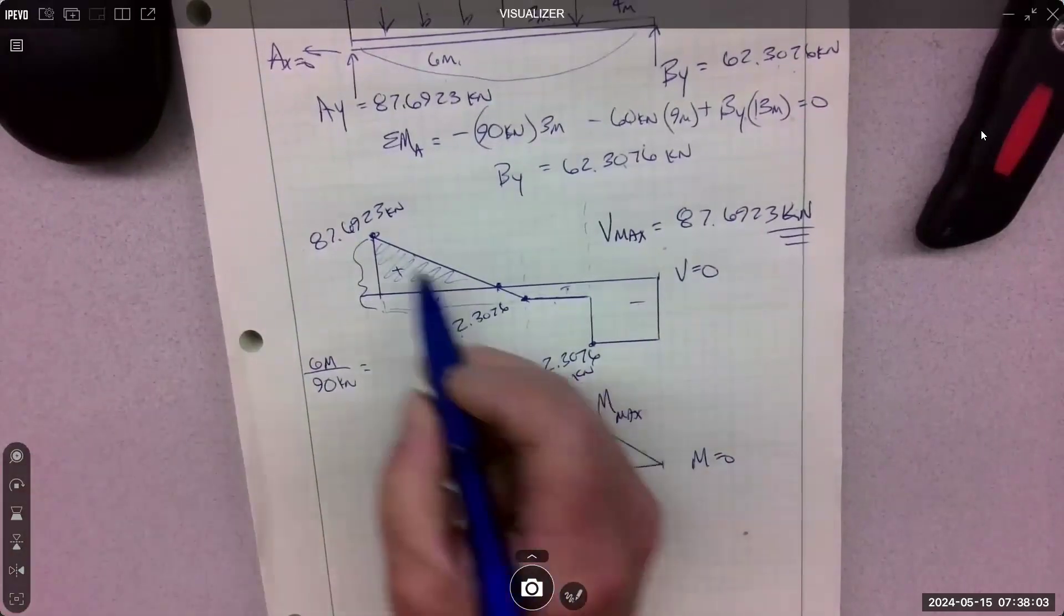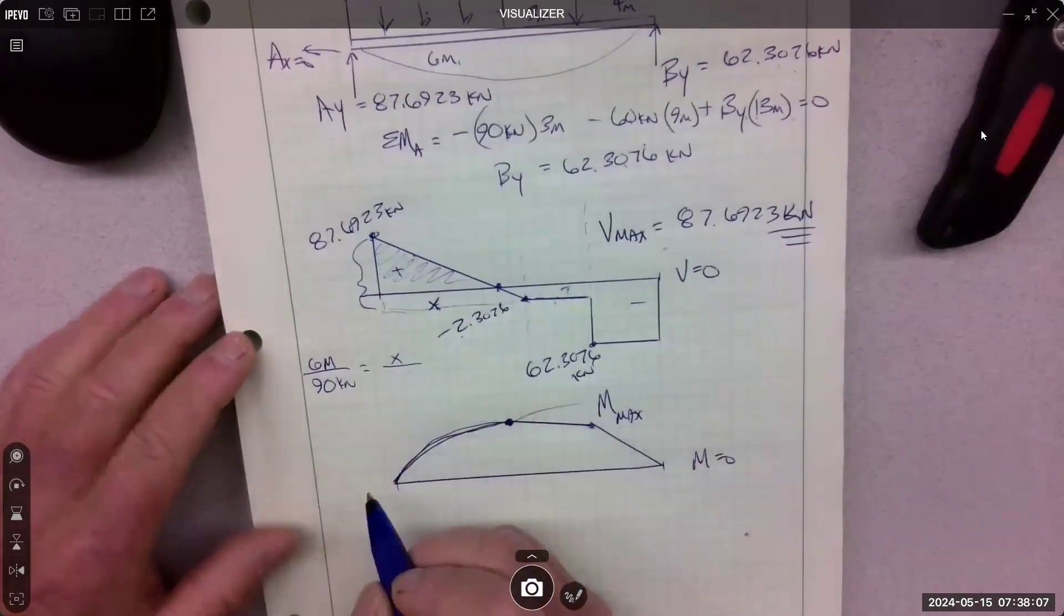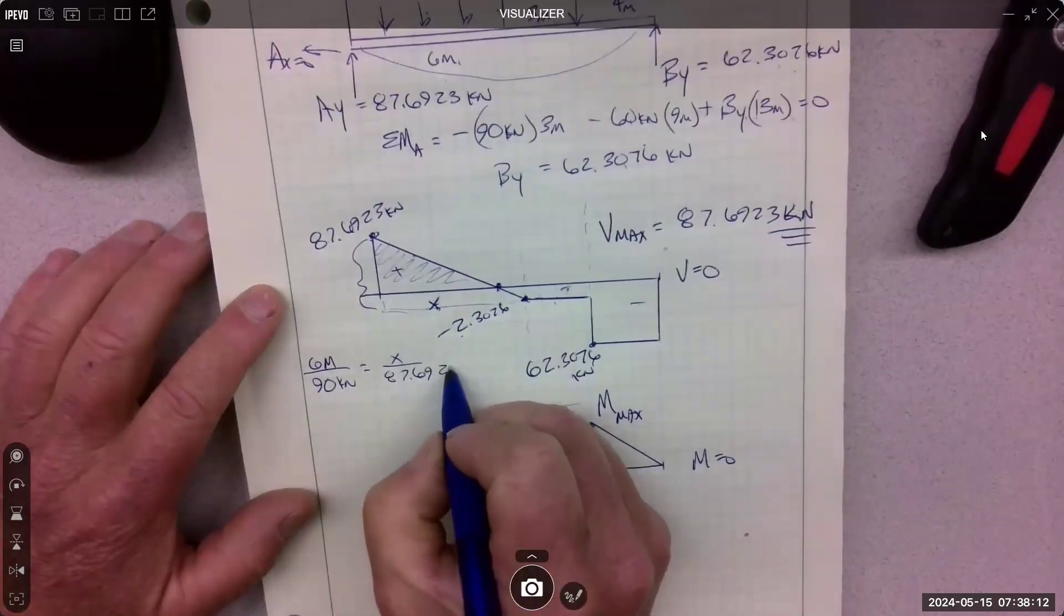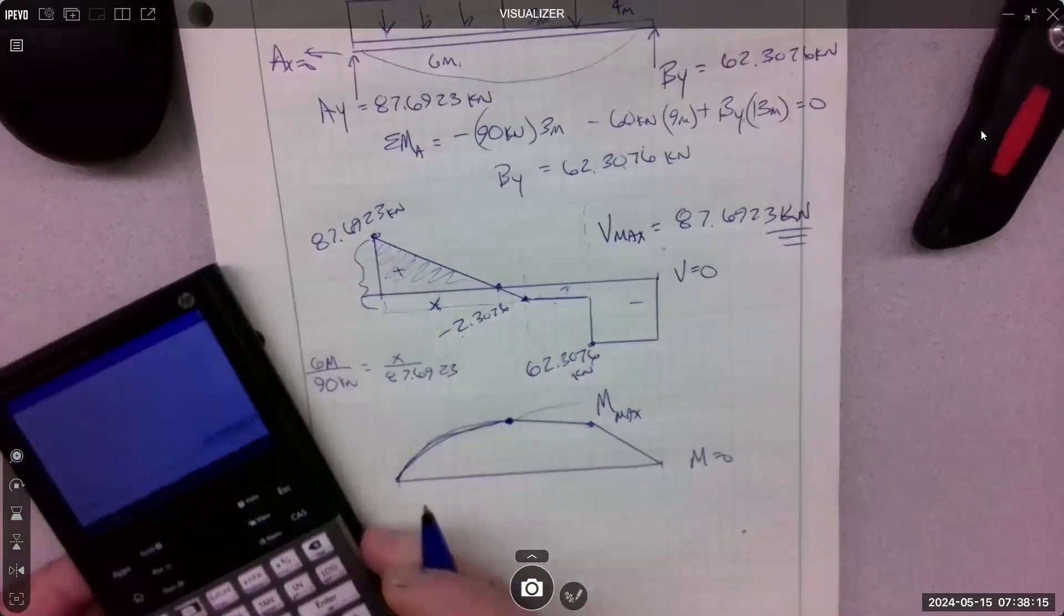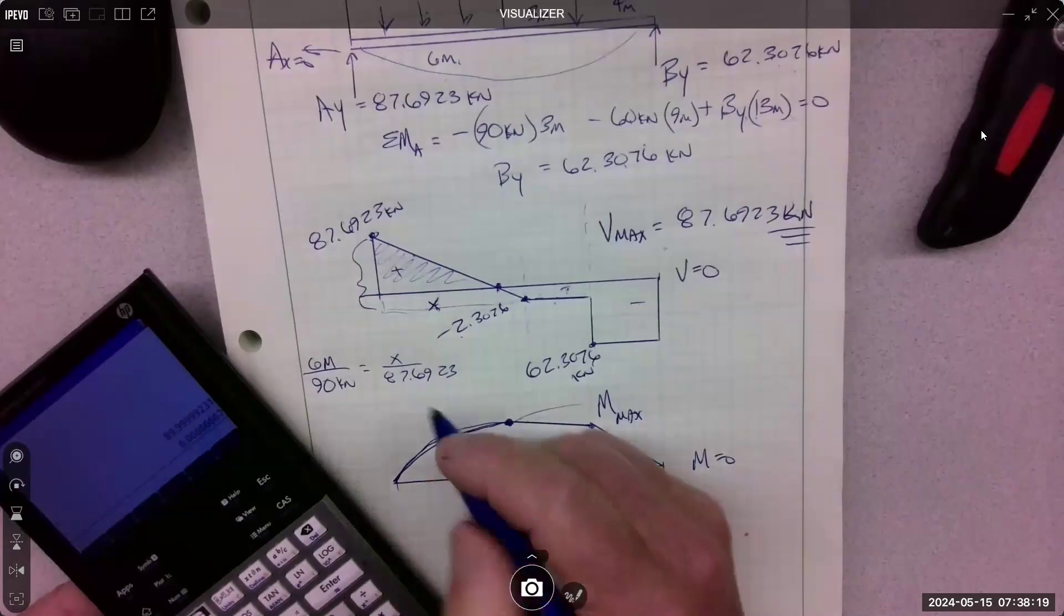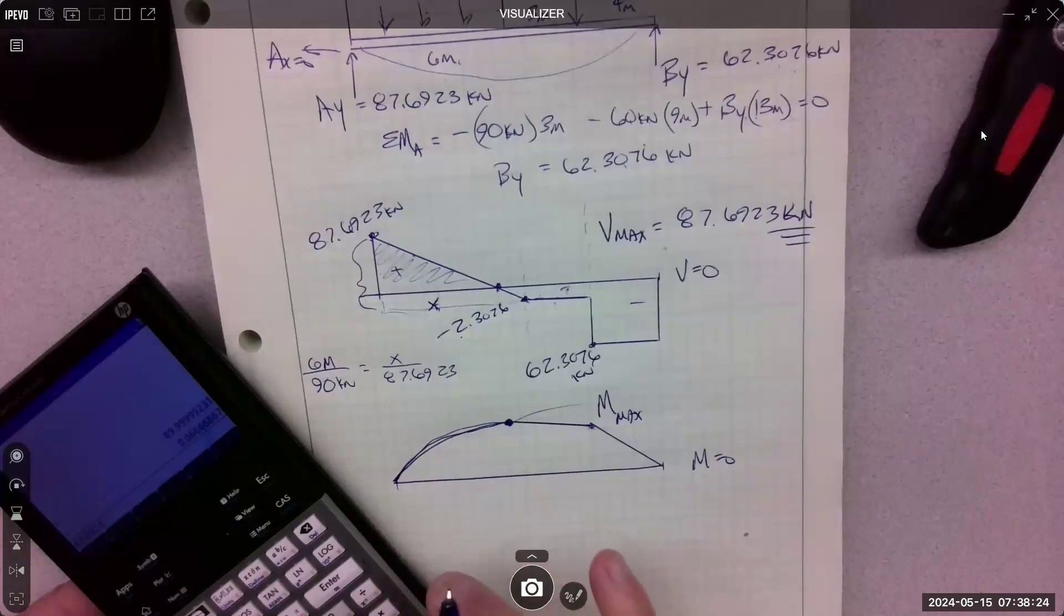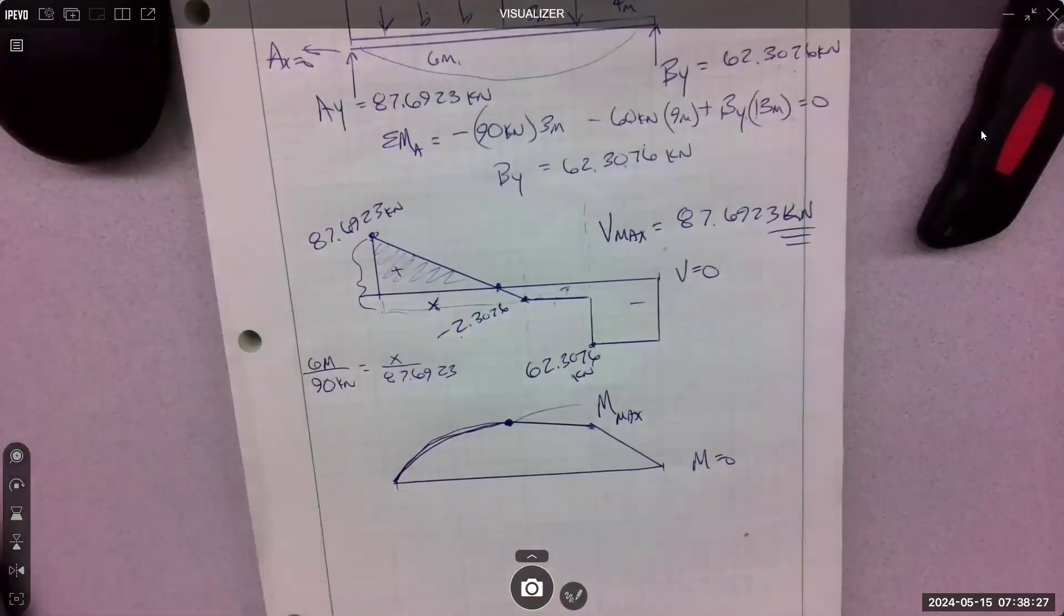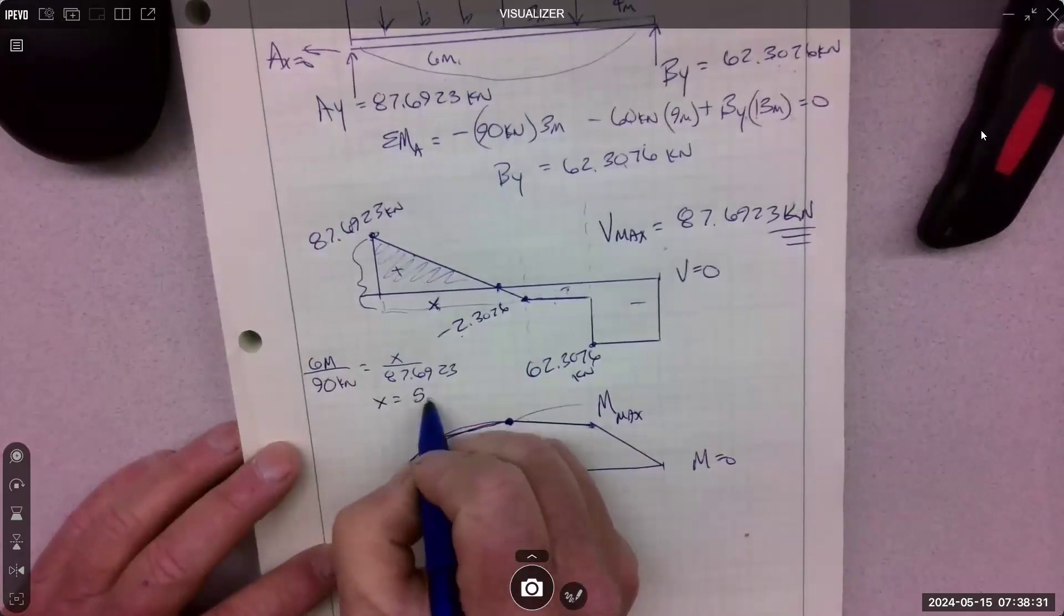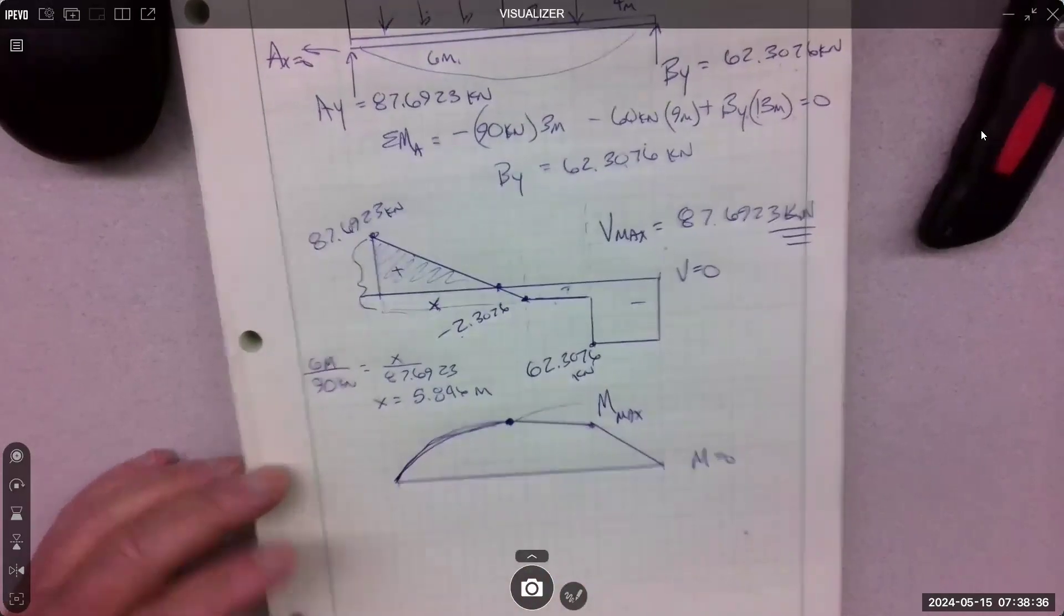And then that, since they share the hypotenuse, we can say x is to 87.6923. So that gives us our x. So 6 divided by 90, times 87.6923. That's 5.846 meters. That's this distance.